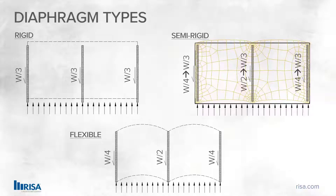The final type is something in between: the semi-rigid diaphragm. While maybe not used as often as the rigid and flexible diaphragms in analysis software, the semi-rigid diaphragm models the actual stiffness of the member itself. We set up the actual material properties and the thickness of the plate to calculate the overall stiffness.